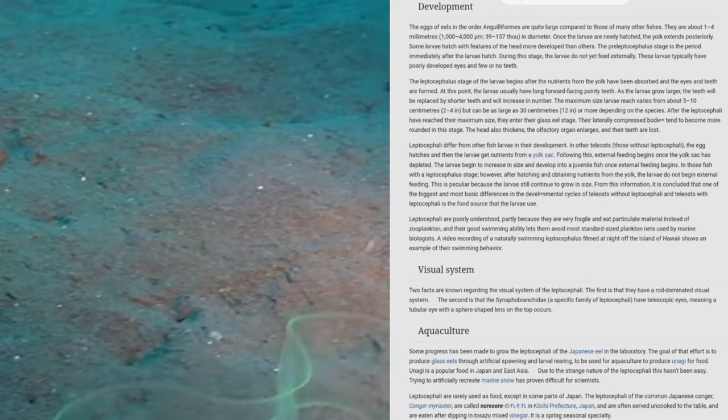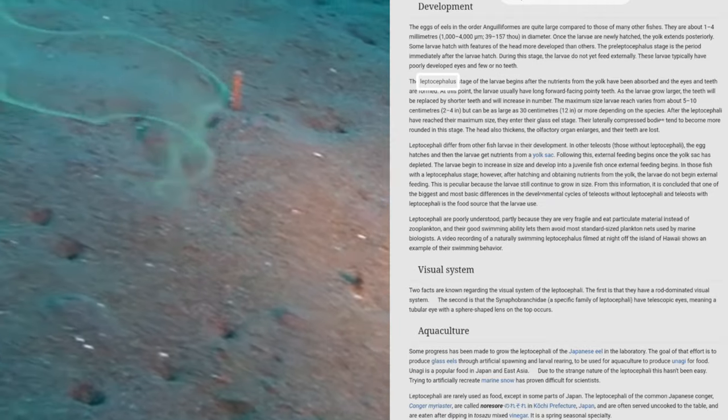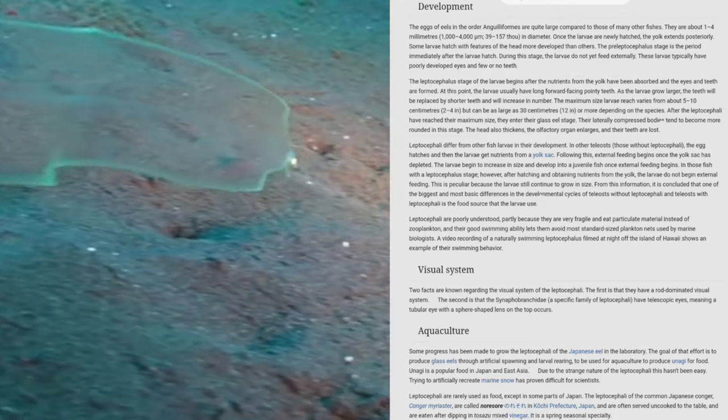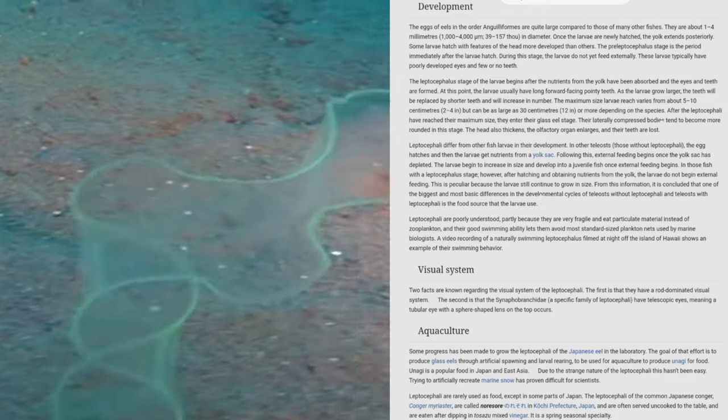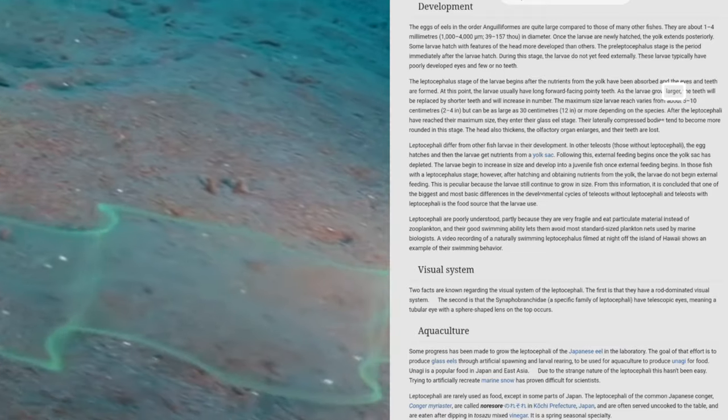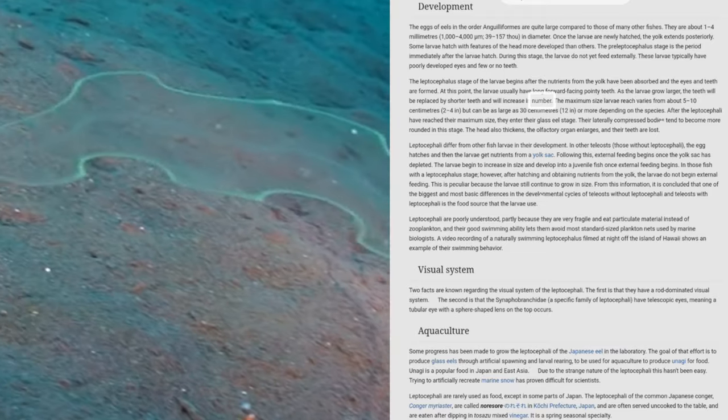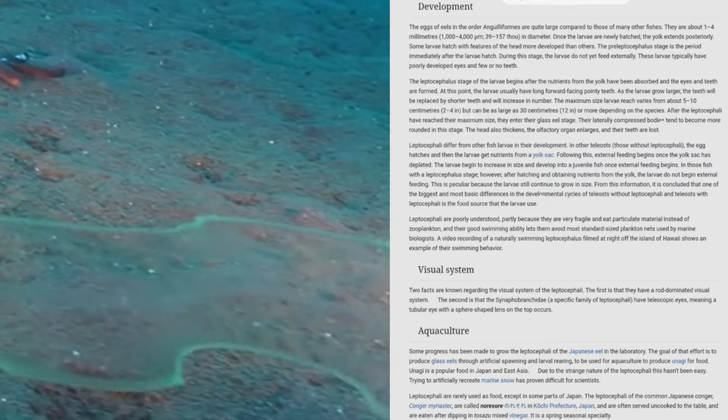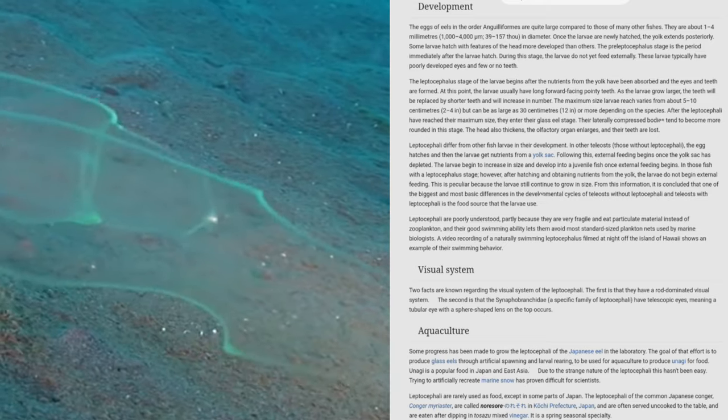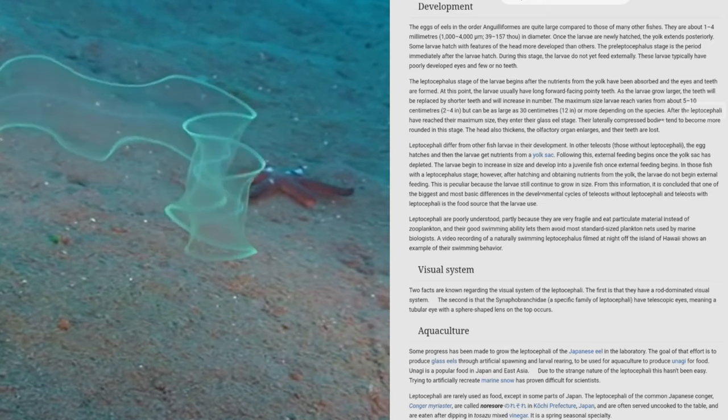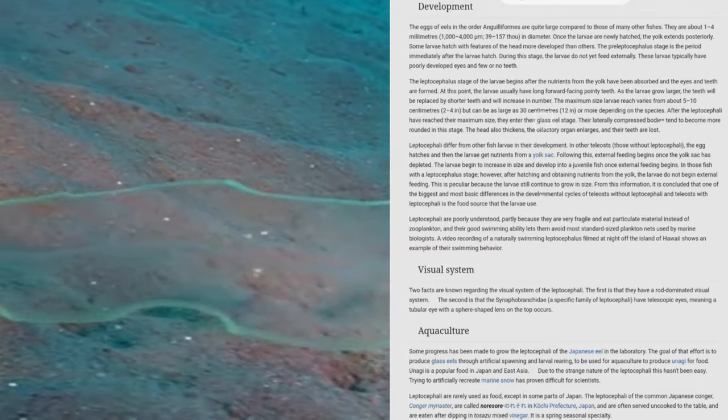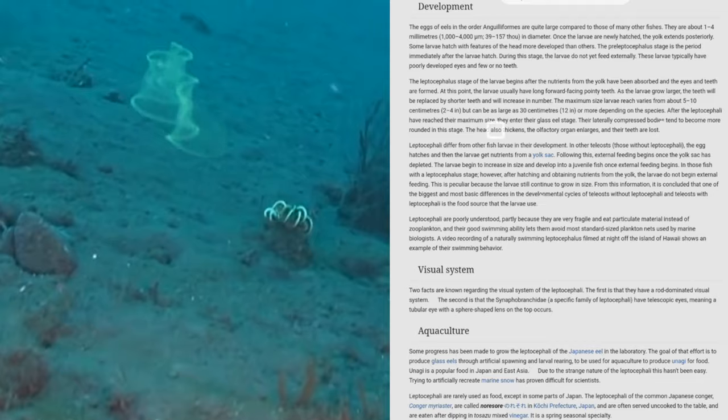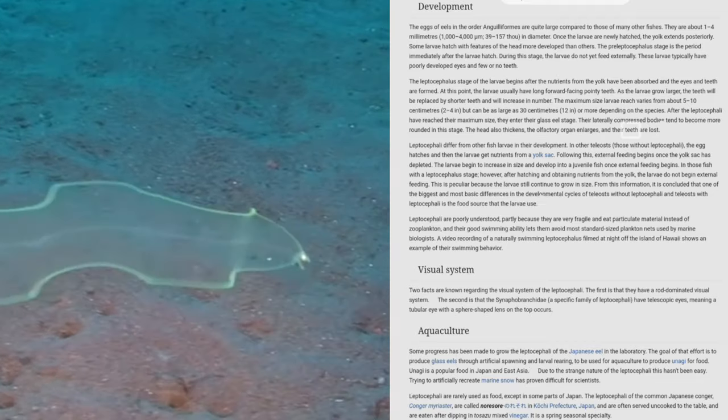The leptocephalus stage of the larvae begins after the nutrients from the yolk have been absorbed and the eyes and teeth are formed. At this point, the larvae usually have long forward-facing pointy teeth. As the larvae grow larger, the teeth will be replaced by shorter teeth and will increase in number. The maximum size larvae reach varies from about 5 to 10 centimeters, but can be as large as 30 centimeters or more depending on the species. After the leptocephali have reached their maximum size, they enter their glass eel stage. Their laterally compressed bodies tend to become more rounded in this stage. The head also thickens, the olfactory organ enlarges, and their teeth are lost.